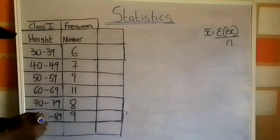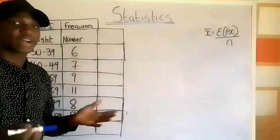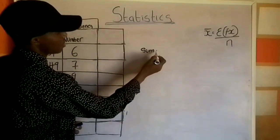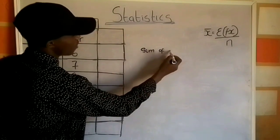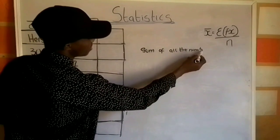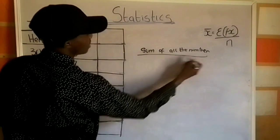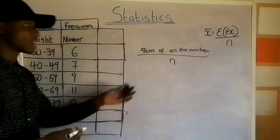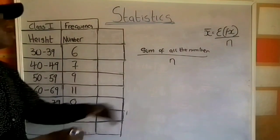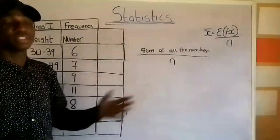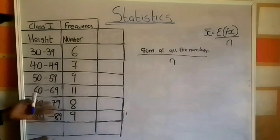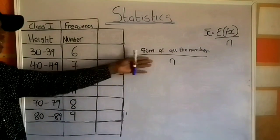This is grouped data, therefore I cannot use the normal formula — the sum of all the numbers over the count of all. I cannot use this formula because this is grouped data. I can only use the formula for grouped data to calculate the arithmetic mean.